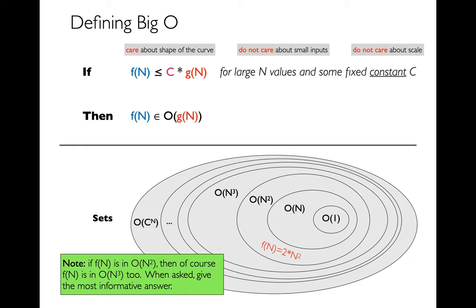If I ask what is the complexity of 2n², there are lots of correct answers — you could say O(n³), and that is true, but it's not very informative. You want to give the most information, which means finding the smallest set that contains it. So even though it's correct to say 2n² is in O(n³), the better answer is O(n²). That's the answer you need to give in this class — the most restrictive answer you're able to give.